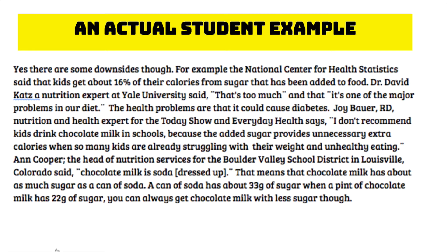And then also this person puts in 'and that it's one of the major problems in our diet.' Notice he selected not only a quotation which supports what he wants to get across in his argumentative essay, but he's taken just the parts of the quotation that actually fit. Skipping down to Joy Bauer, RD nutrition and health expert for the Today Show and Everyday Health, she says — notice the comma — 'I don't recommend kids drink chocolate milk in schools because the added sugar provides unnecessary extra calories when so many kids are already struggling with their weight and unhealthy eating.' Notice he opted to include the entire quotation, and he sets it up by telling us who the expert is, then includes a comma right before the quotation.